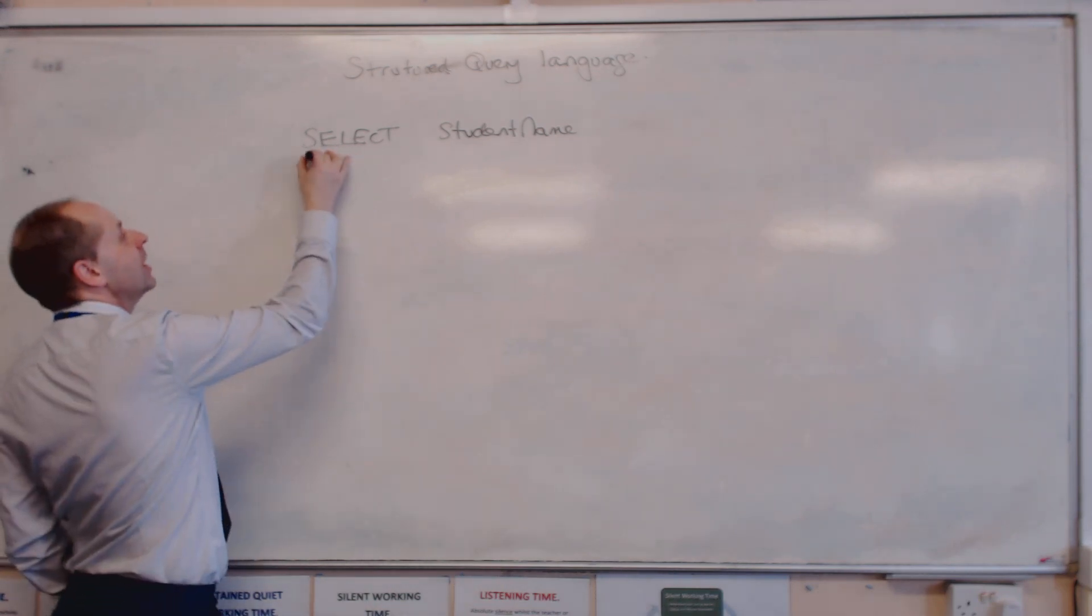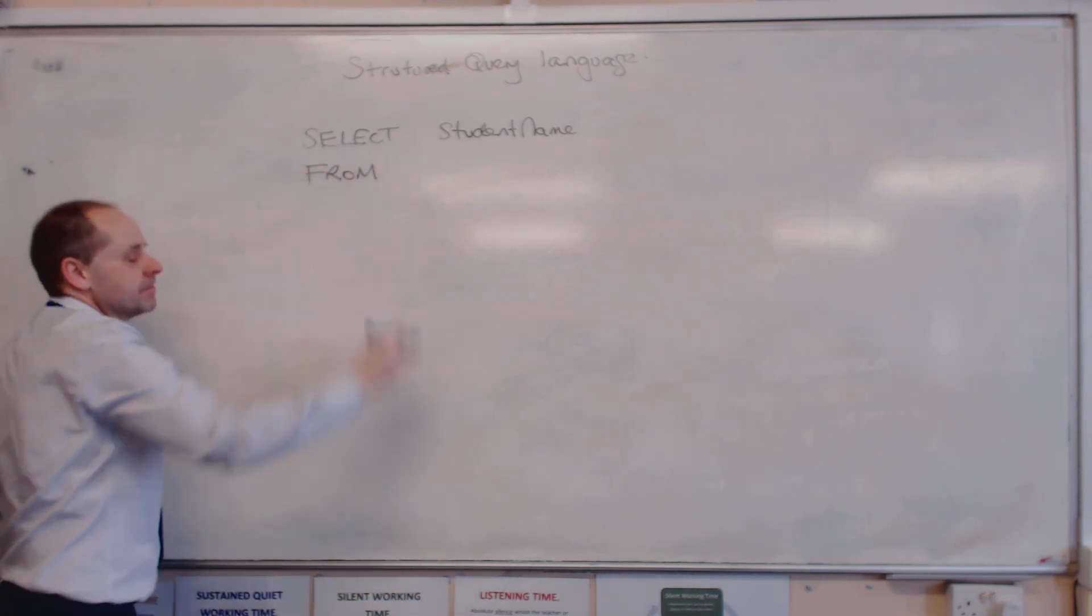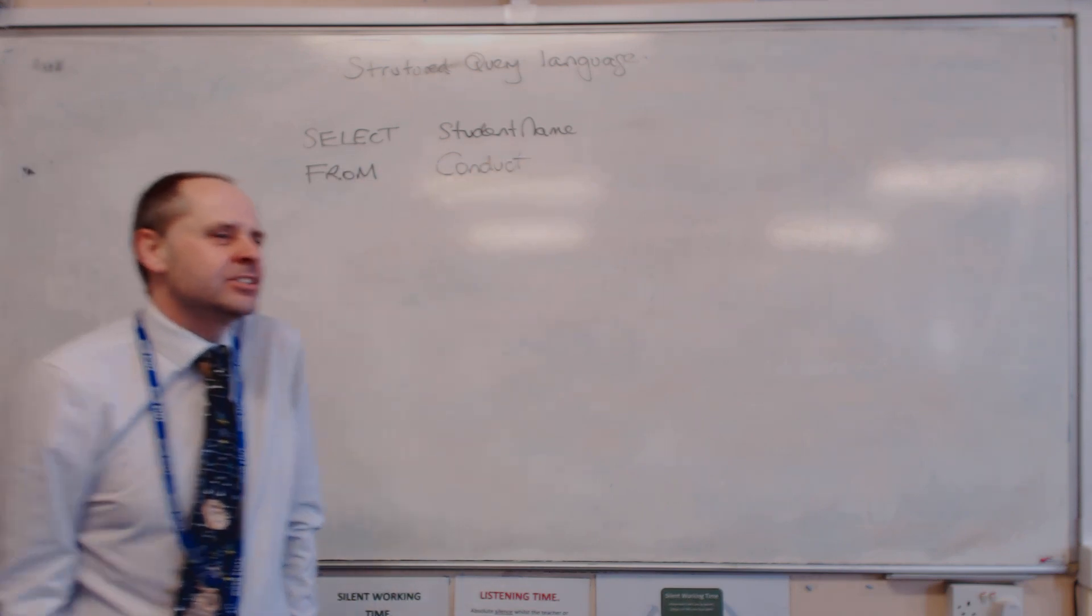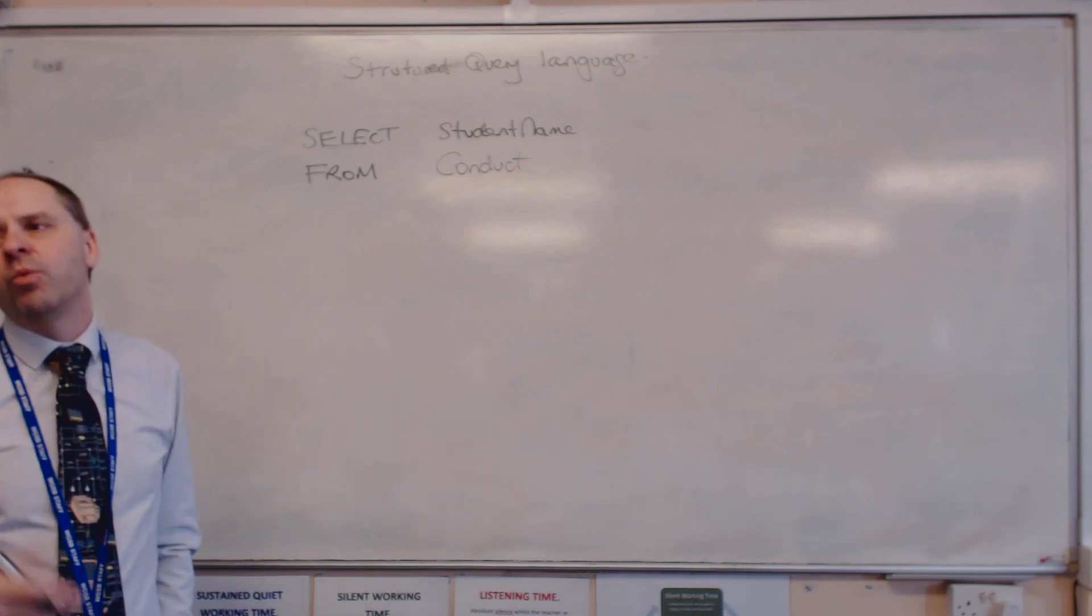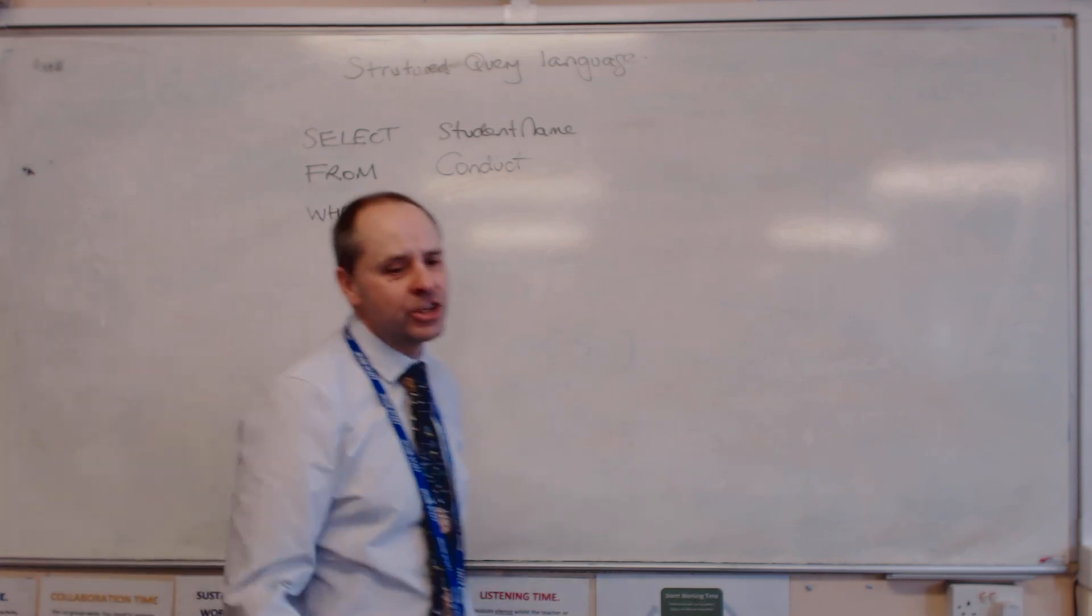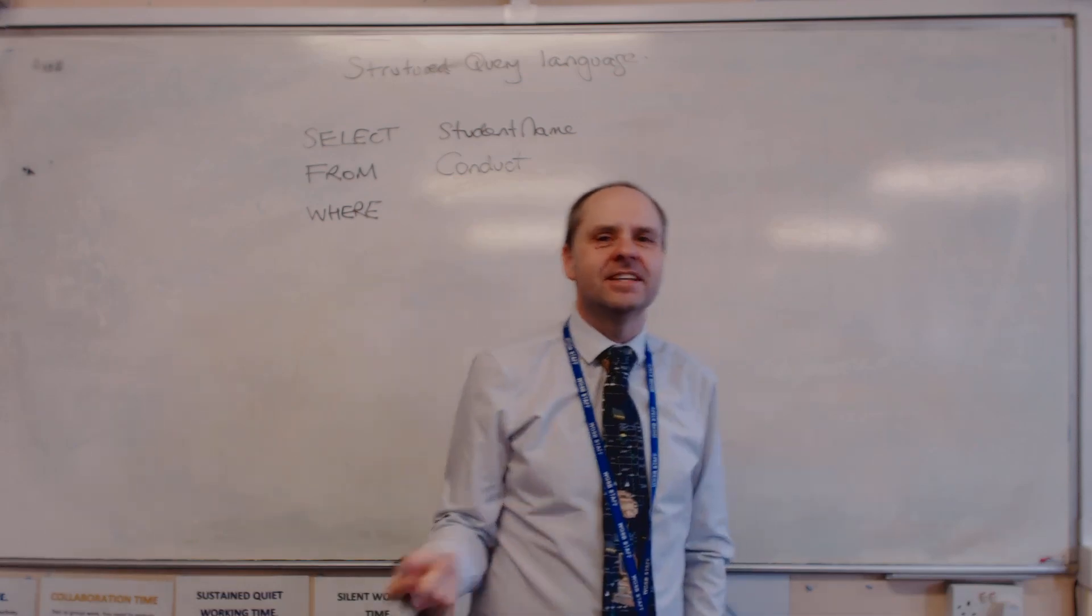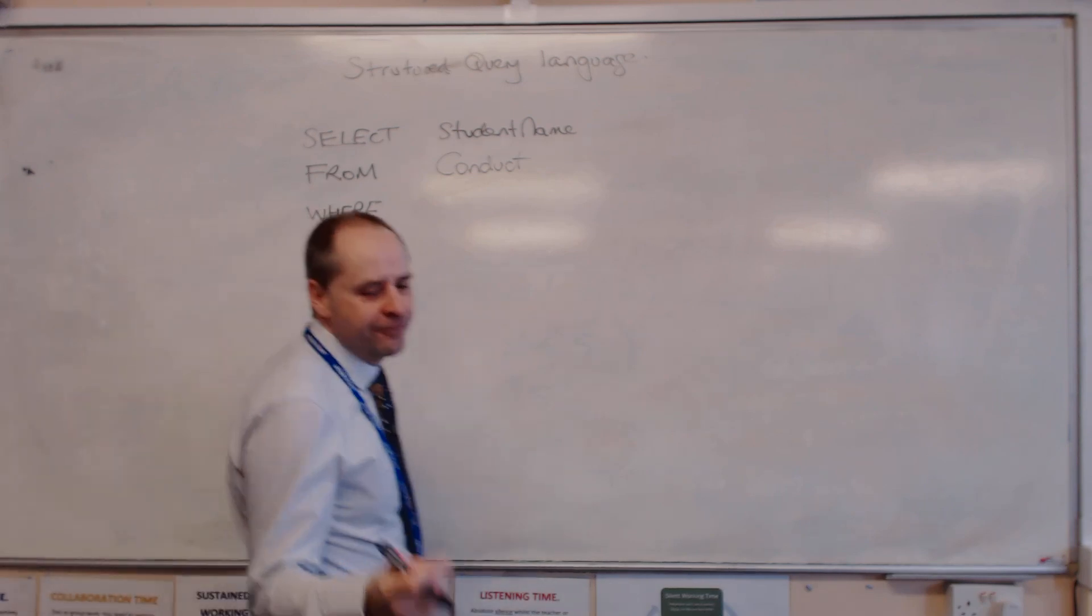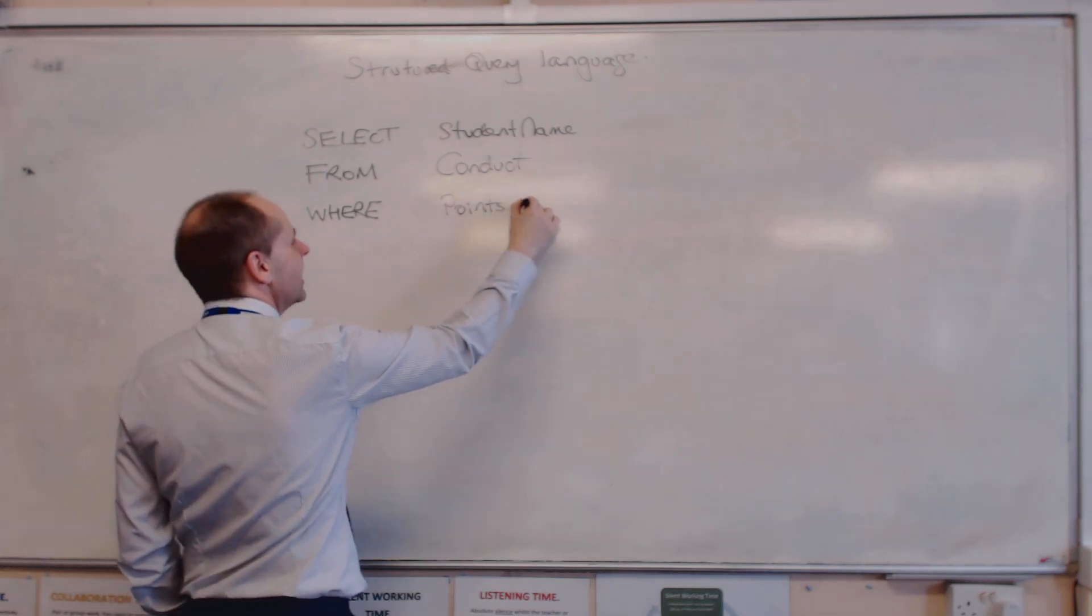We need to say where we're taking it from. Where is it coming from? So we use the keyword FROM. We were told what the table was - the table was called Conduct. So you can read it, it reads like English. Select the student name from Conduct. And we want to put conditions on it. So WHERE is certain condition. The keyword is WHERE. They told us the condition - anyone that's got negative points. How do we detect that a value is negative? Less than zero.